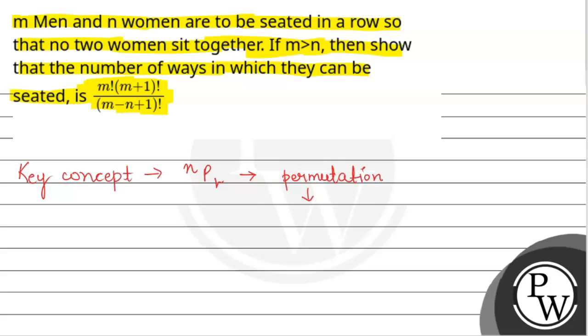Permutation is the number of ways of arranging R items from a set of N items.